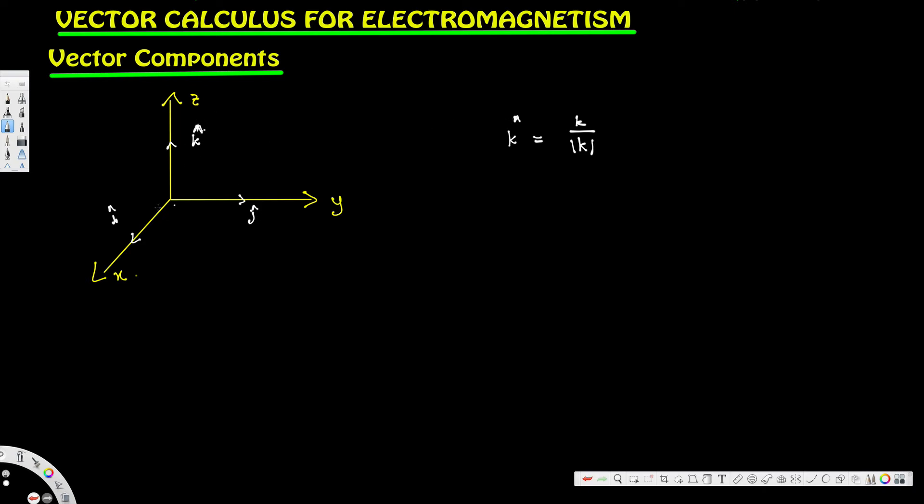Now when we express a vector equation in 3D space, we usually express it like this: if A is this vector with x, y, z components, this is going to be Ax i hat plus Ay j hat.